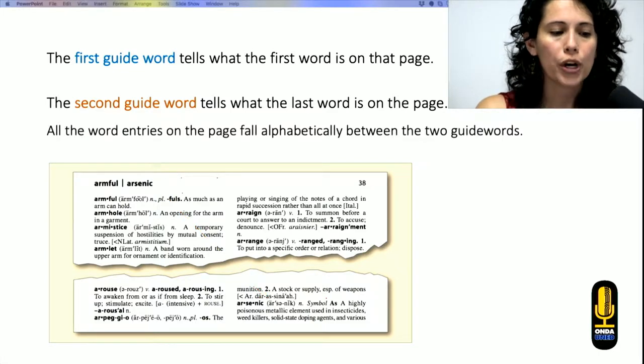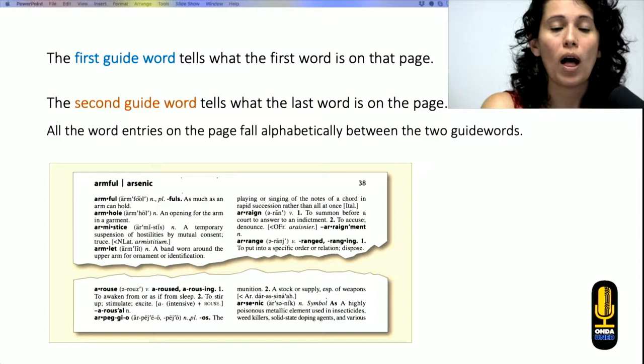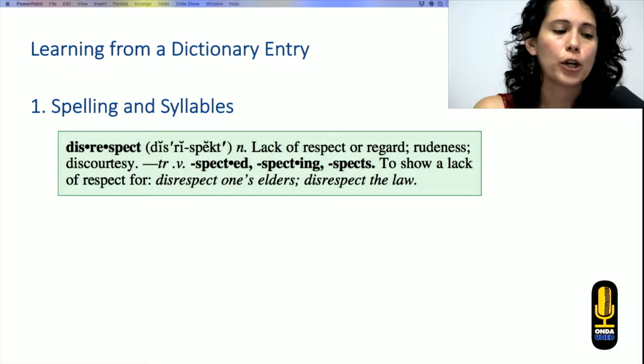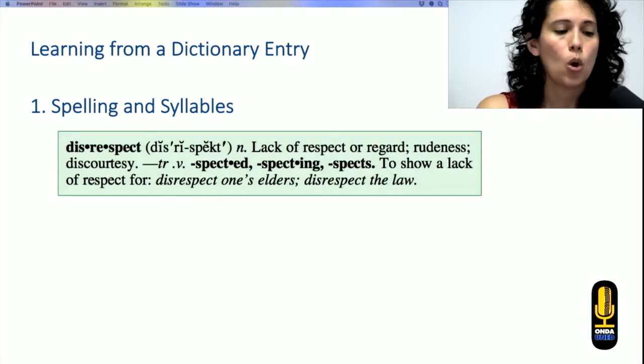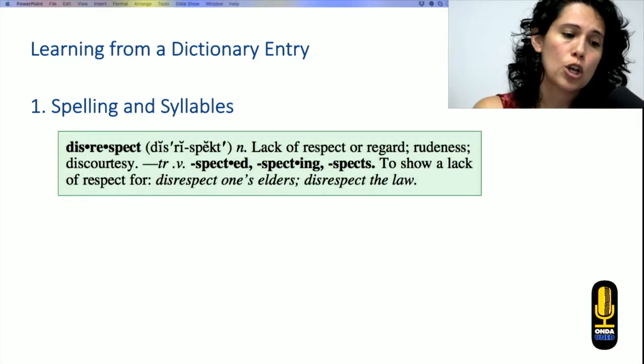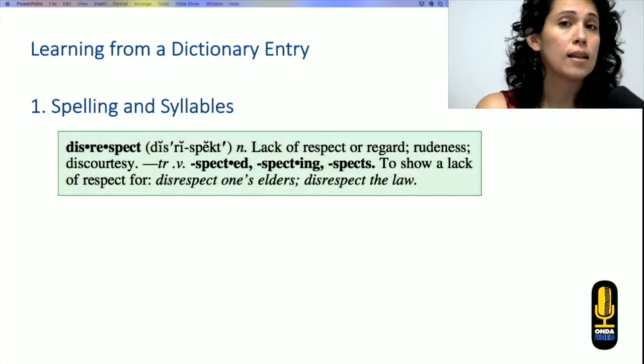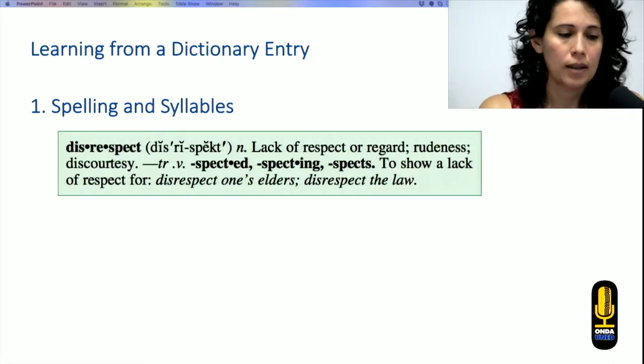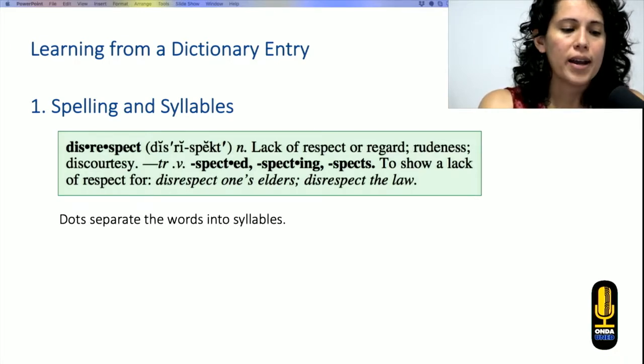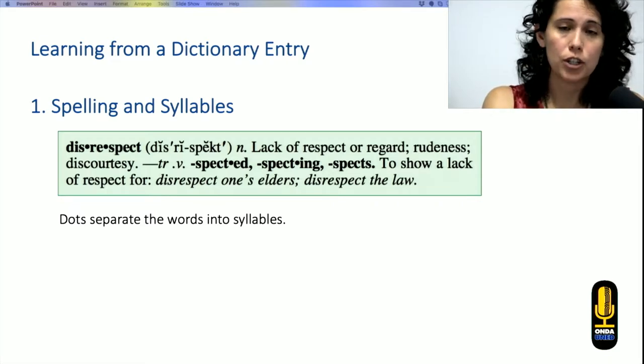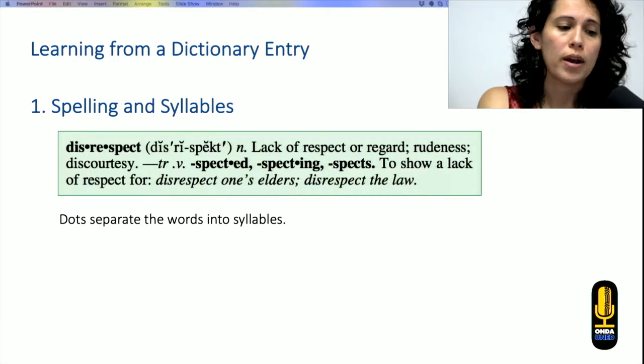All the word entries on the page fall alphabetically between the two guide words. Now, what else can we learn from a dictionary entry? Well, we can learn spelling and syllables. So you get to see how to spell it correctly, and also how many syllables the word has. We might find this separated by dots. If you see, there are dots separating the word, and those are the symbols that help us to see where you need to divide the word by syllables.